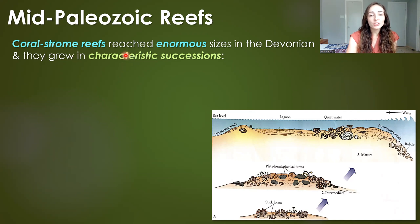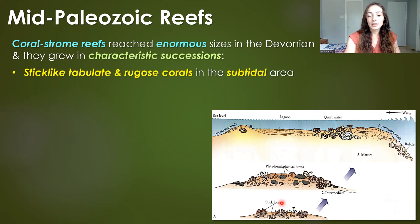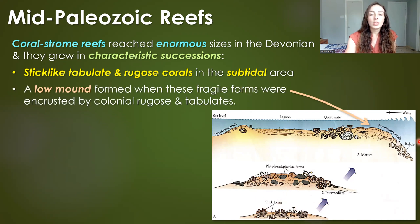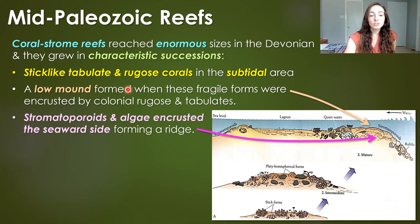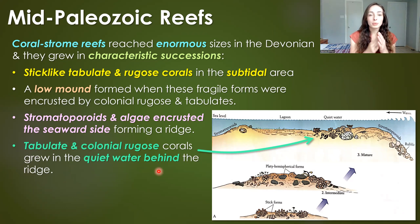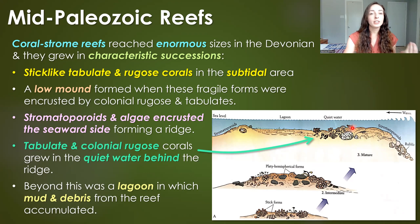These reefs grew in characteristic successions visible in the fossil record. First, stick-like tabulate and rugose corals grew in the subtidal area. Then a low mound formed when these fragile corals were encrusted by colonial rugose and tabulate corals. Stromatoporoids and algae also encrusted structures on the seaward side, forming a durable ridge that blocked water behind it into a quiet area where tabulate and colonial rugose corals grew. Beyond that was a calm lagoon where muds accumulated along with reef debris.